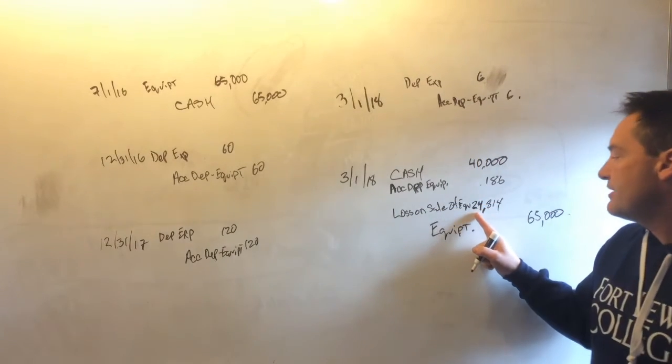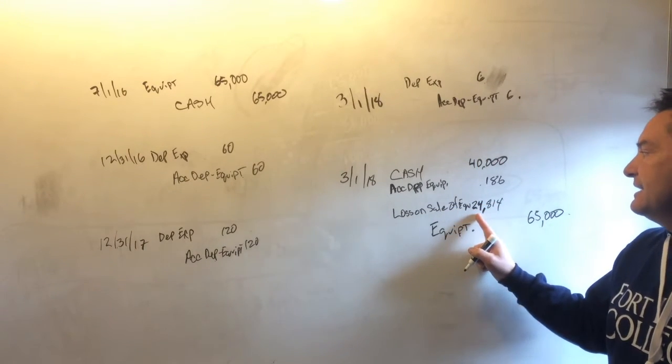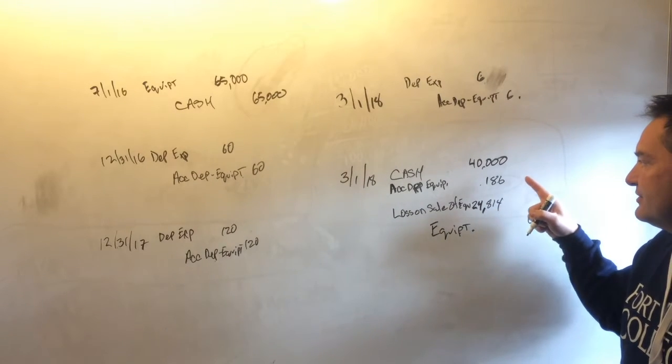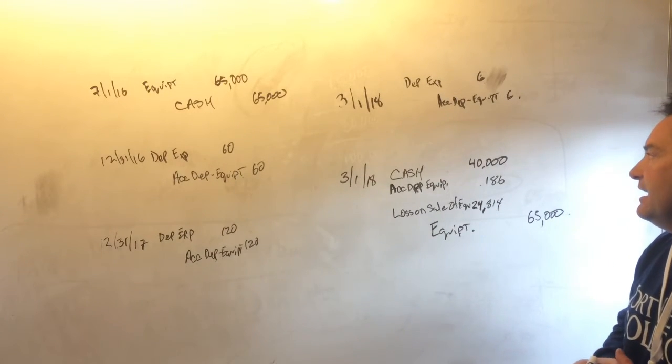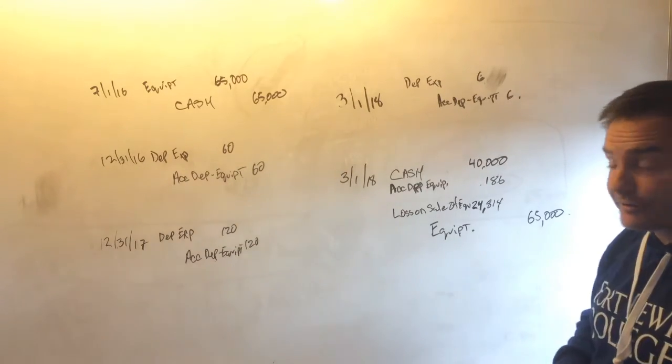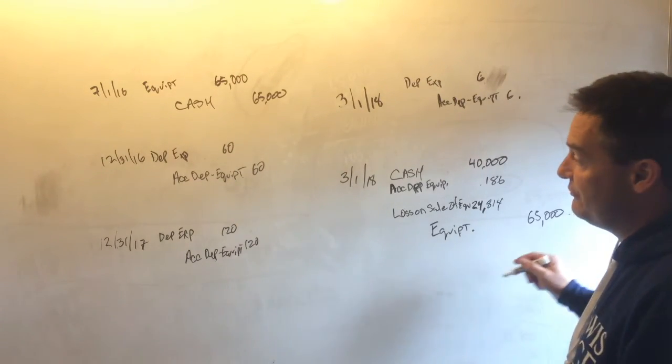And this is going to be a loss on sale of equipment. This $24,814 is a plug when you add $24,814 plus $186 plus $40,000 to $65,000. And so that would be the journal entry for the disposal.